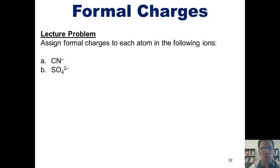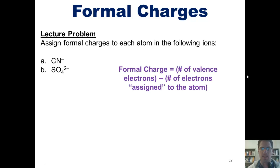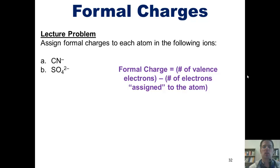I want you to assign formal charges to each atom in the following ions. You're welcome to pause the video and attempt this on your own, as I'm going to show you the answers to both of these right now. In order to calculate the formal charges for each atom in our first example, CN⁻, we have to remember the formula: formal charge equals the number of valence electrons in each atom minus the number of electrons assigned to the atom. We first have to draw the Lewis structure for CN⁻, which looks like this.